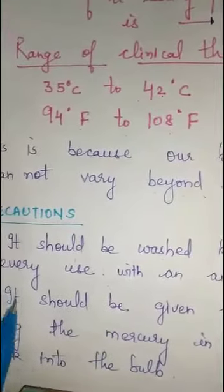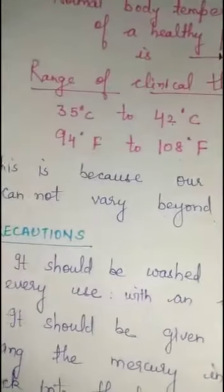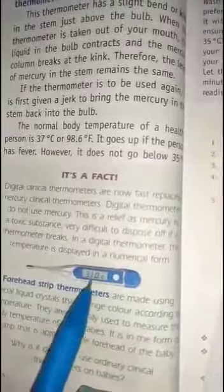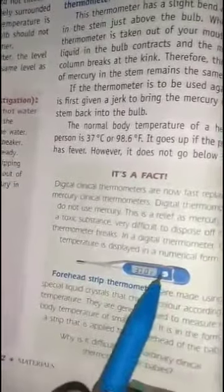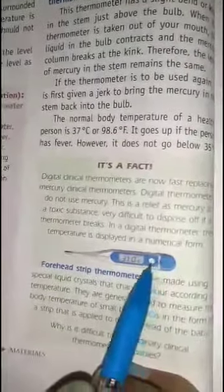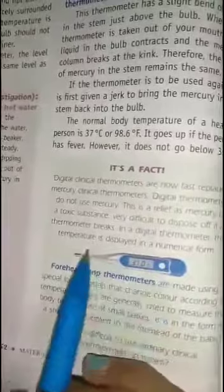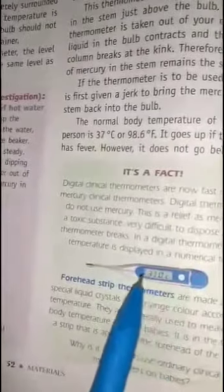Earlier we were using glass tube clinical thermometers, but nowadays digital thermometers are being used. The advantages are: they do not use mercury, which is a toxic substance; the temperature is displayed as a number, making it easy to read; and disposal is not difficult compared to glass thermometers containing toxic mercury.